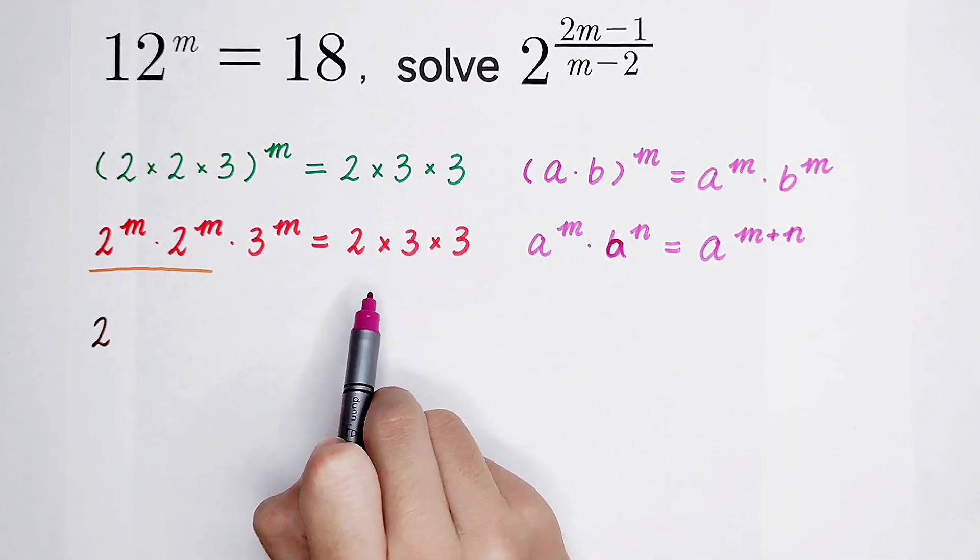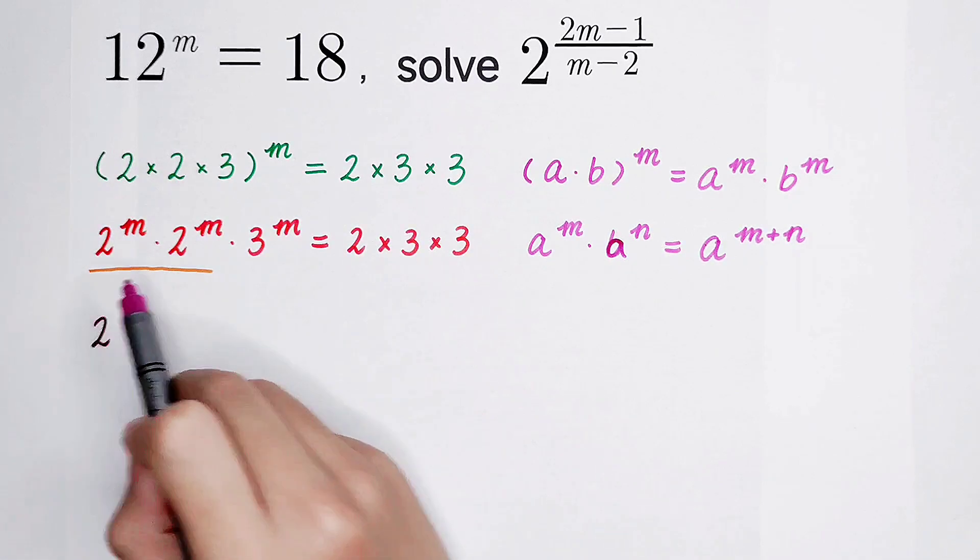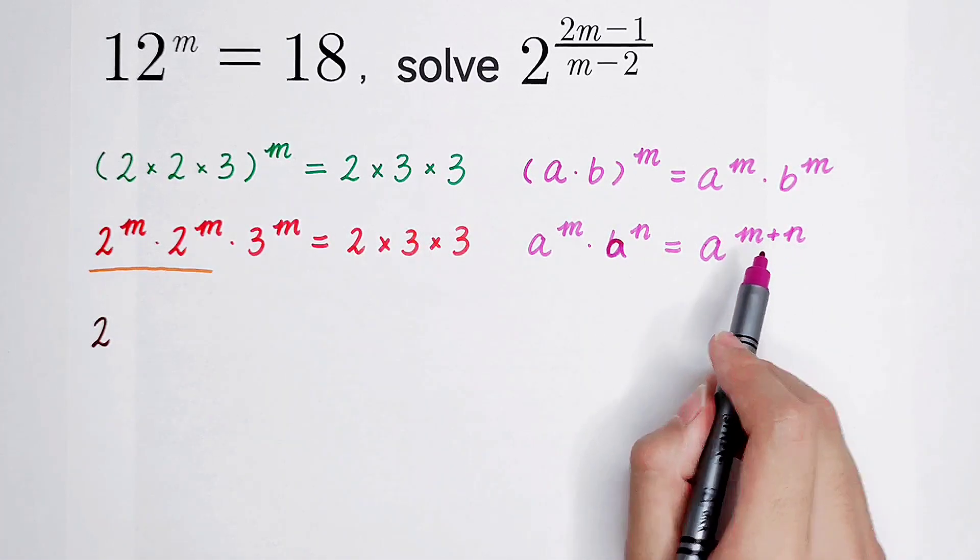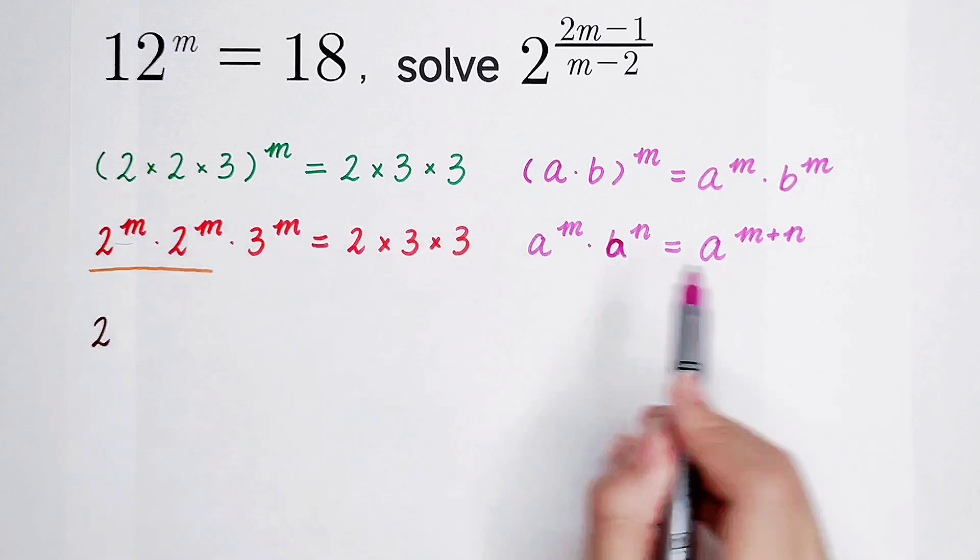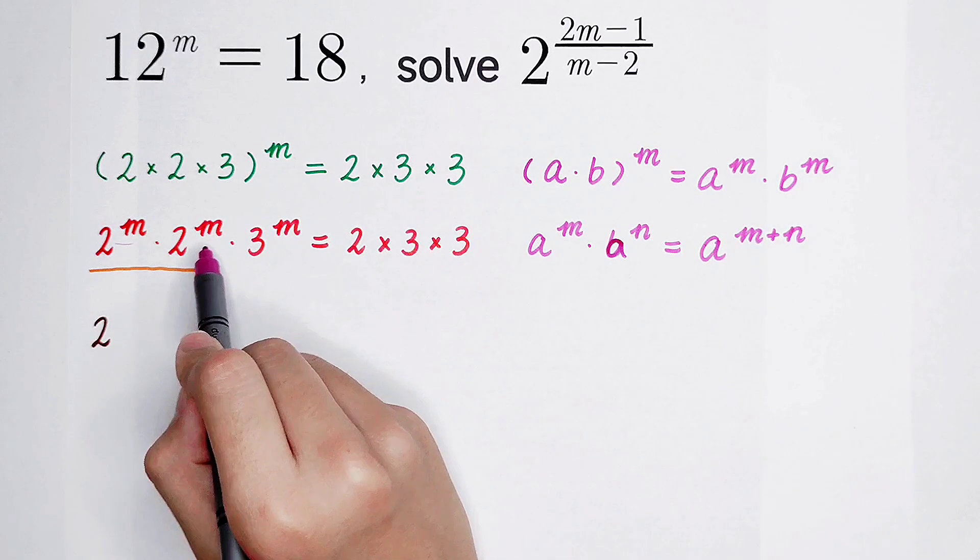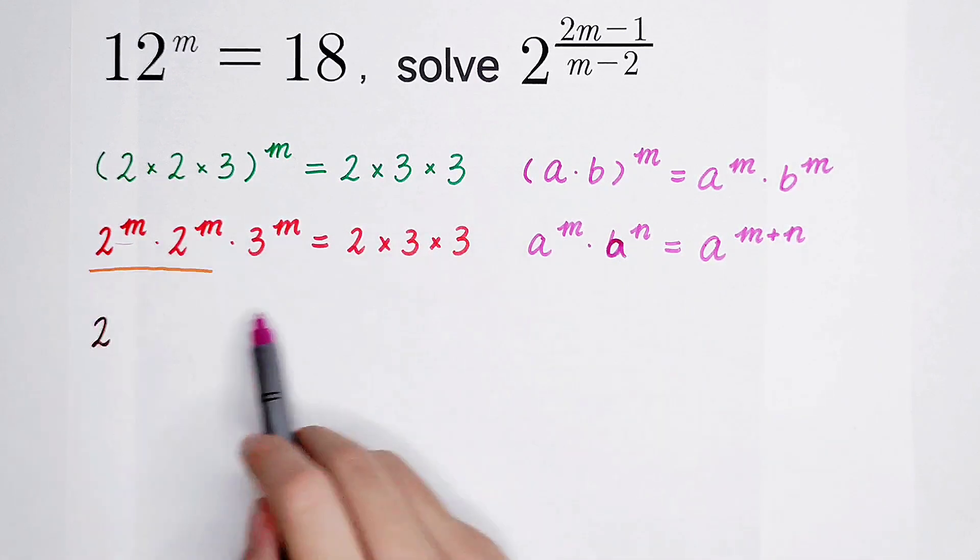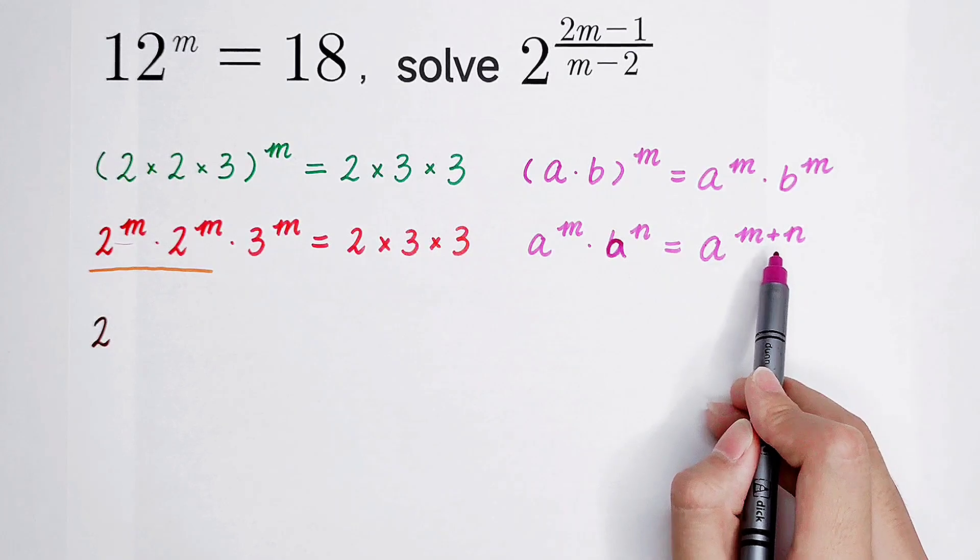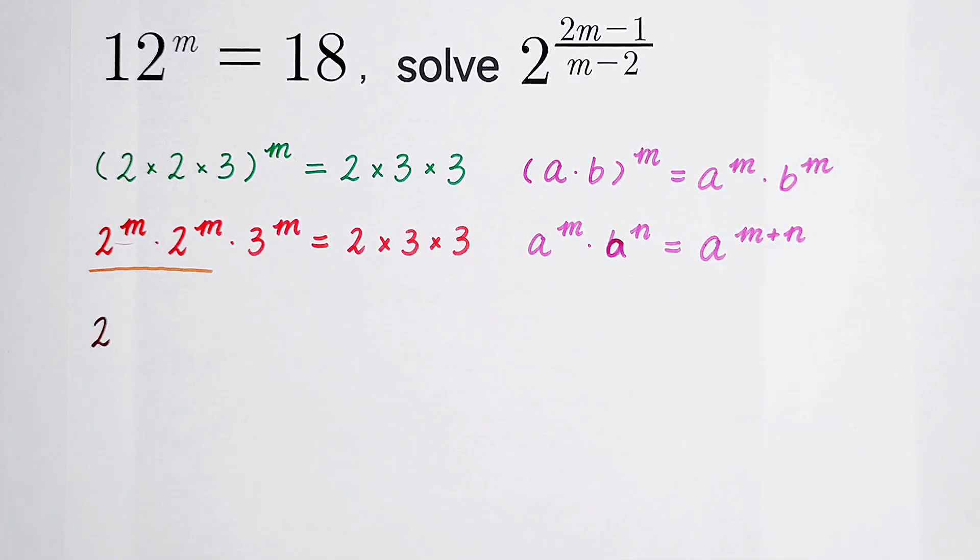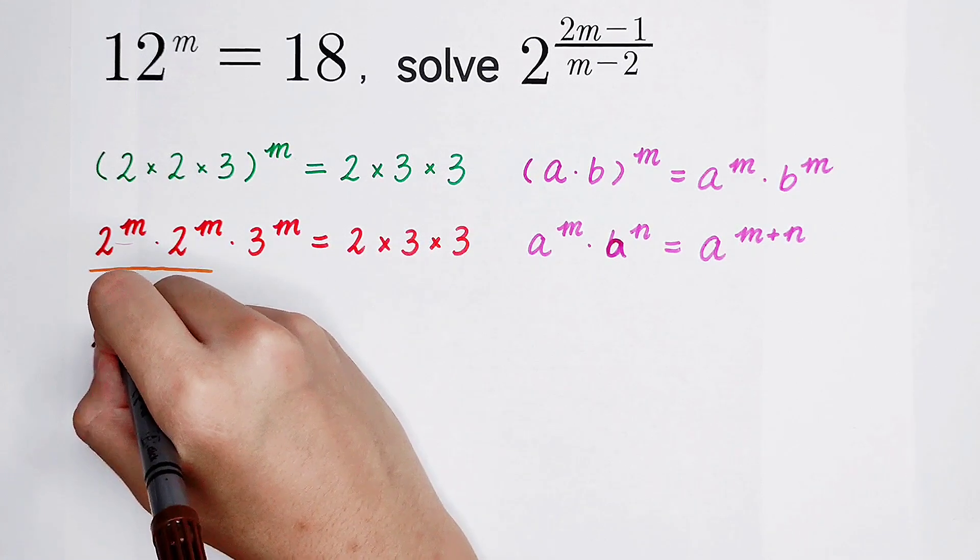In this equation, a is 2. And m and n, what's m? It is here, m. What's n? It is here, another m. So in this case, m and n, they have the same value, m. So m plus m is 2m.